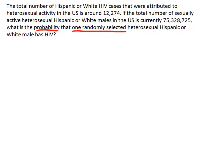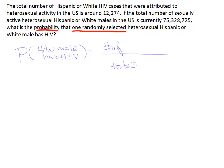All we need is a basic probability fraction. That fraction is the probability that a Hispanic or white male has HIV, which is set up as: number of Hispanic or white males with HIV, divided by the total number of Hispanic or white males.